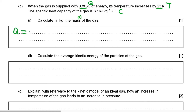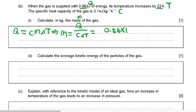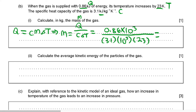We know heat energy is equal to specific heat capacity multiplied by mass multiplied by change in temperature. So from this, mass is going to be equal to Q divided by specific heat capacity multiplied by delta T. This is equal to 0.86 kJ converted to joules — multiply by 1,000 — divided by specific heat capacity, which is 3.1 multiplied by 10 to the third power, multiplied by the change in temperature. This gives us an answer of 0.012 kilogram.